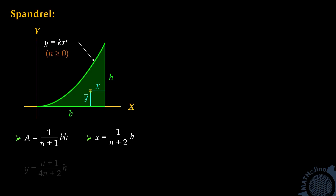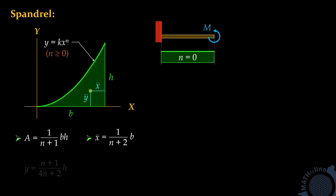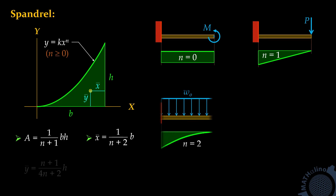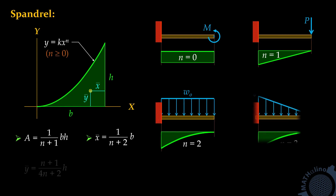The shape of the moment diagram by parts for a concentrated moment load is rectangular. The moment diagram by parts for a concentrated load is triangular. The moment diagram by parts due to a uniform load is a parabolic spandrel. And the moment diagram by parts due to a triangular load is a cubic spandrel.